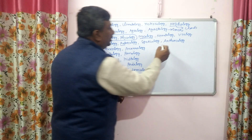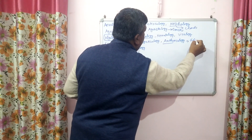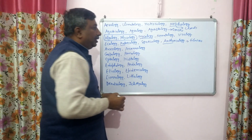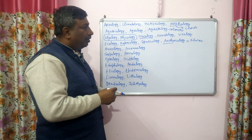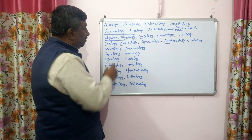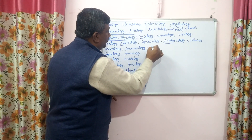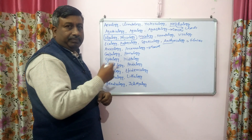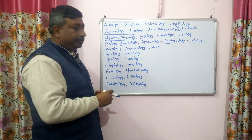Then antho-ecology — antho-ecology is the study of flowers in relation to their environment. This is important. Then auxology and auxenology, which is the study of growth. So auxenometer is related with growth measurement, and auxology/auxenology is the study of growth.